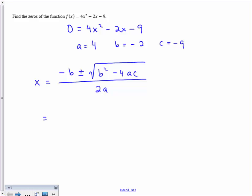Substituting my values in, I'm going to have a negative, negative 2, plus and minus square root, in parentheses, negative 2 squared, minus 4, times 4, times negative 9. And then all of that is over 2, times 4.